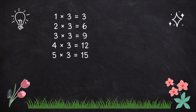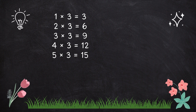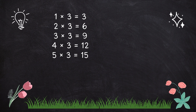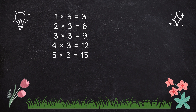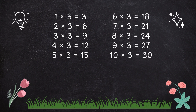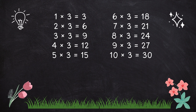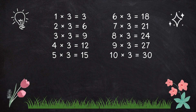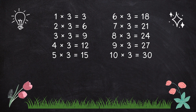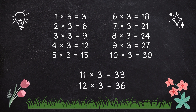1 times 3 is 3. 2 times 3 is 6. 3 times 3 is 9. 4 times 3 is 12. 5 times 3 is 15. 6 times 3 is 18. 7 times 3 is 21. 8 times 3 is 24. 9 times 3 is 27. 10 times 3 is 30. 11 times 3 is 33.